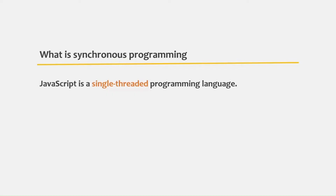JavaScript is a single-threaded programming language. That simply means that the code is executed line by line in the order in which they are defined. And once the execution of one code is complete, then only the next line of code will be executed. So if a code or task takes a long time, the next line of code will have to wait, and will only execute after the previous code completes.